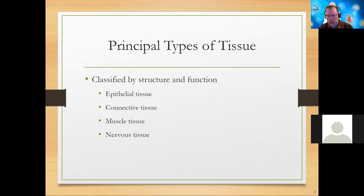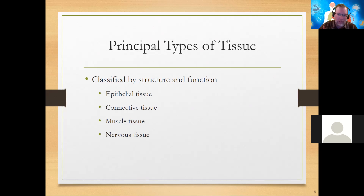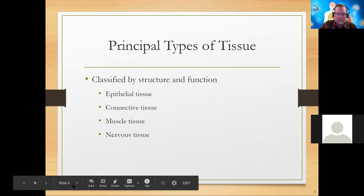In the body we have all kinds of different tubes. All of the tubes in our bodies are going to have a lining of some sort, and this lining is comprised of epithelium. If it's a covering — like the outer layer of the skin, the epidermis — we also consider that to be epithelial. So epithelium is a lining or a covering.